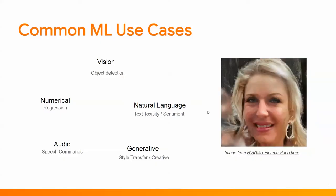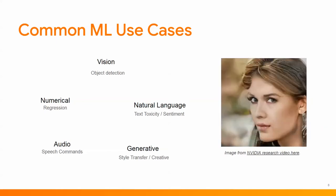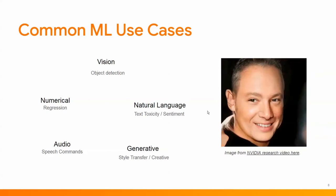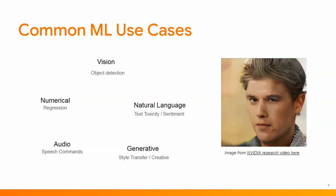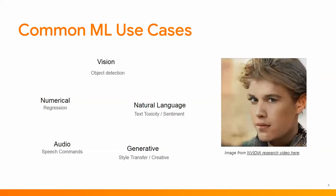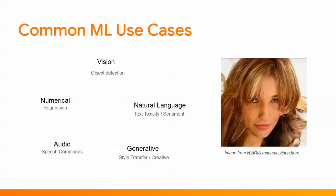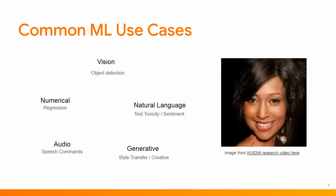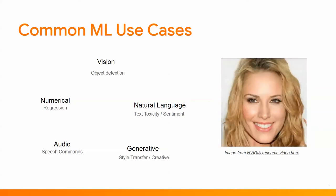What common use cases are there? There are quite a few. We've got things like computer vision, like the object detection example we just spoke about. We've got numerical things like regression — predicting a number. Natural language, for example text toxicity or sentiment analysis. We've got audio for speech commands. And my personal favorite is generative, which is essentially things like style transfer and the creative kind of applications of ML.